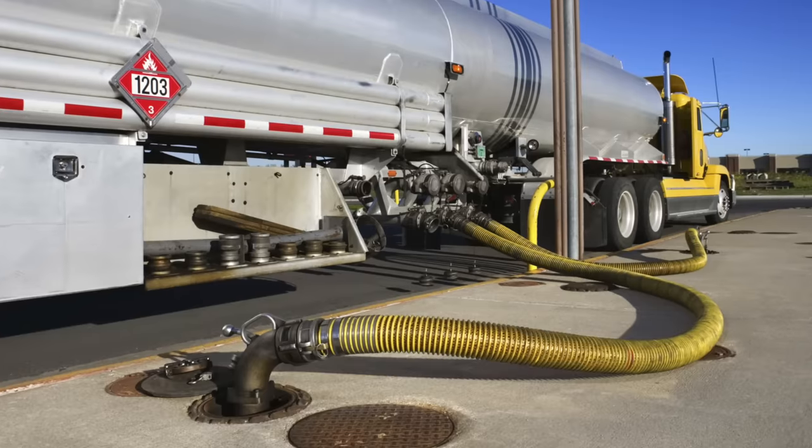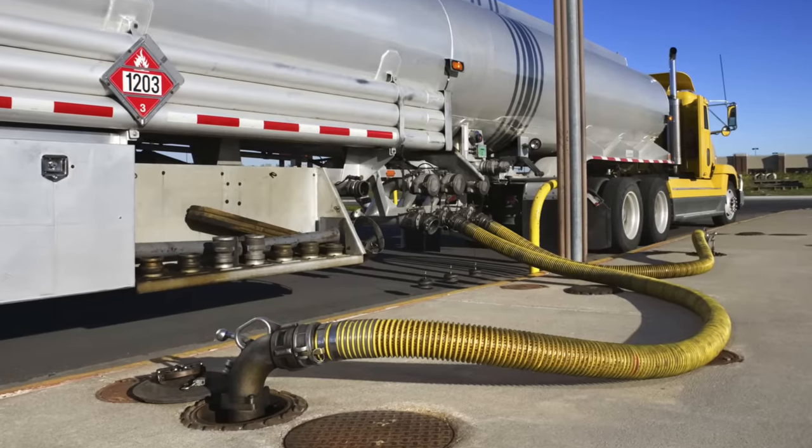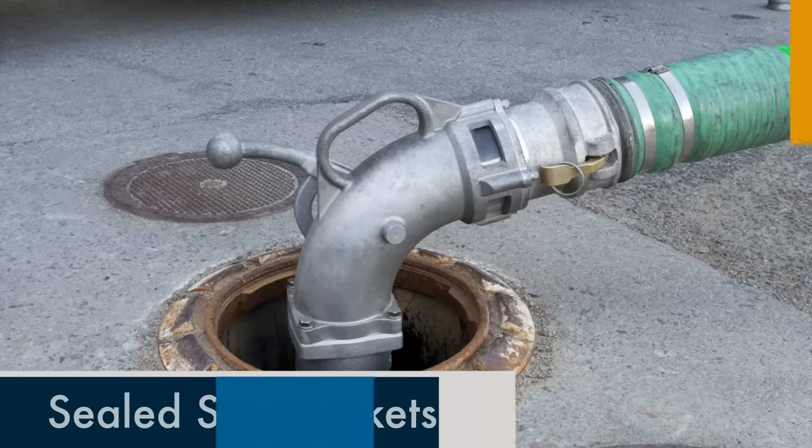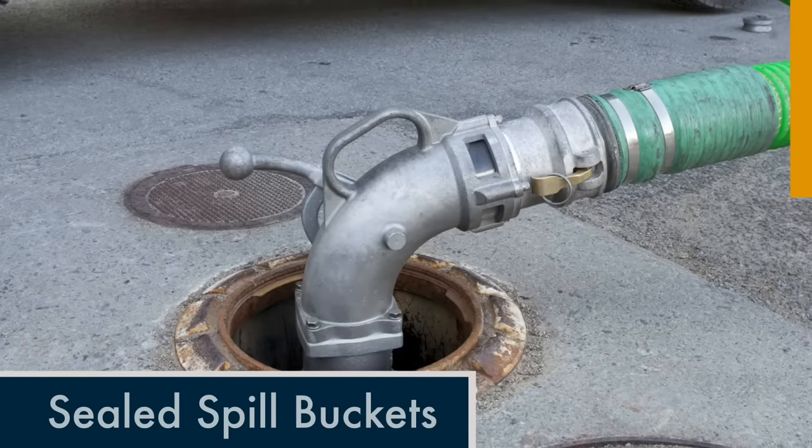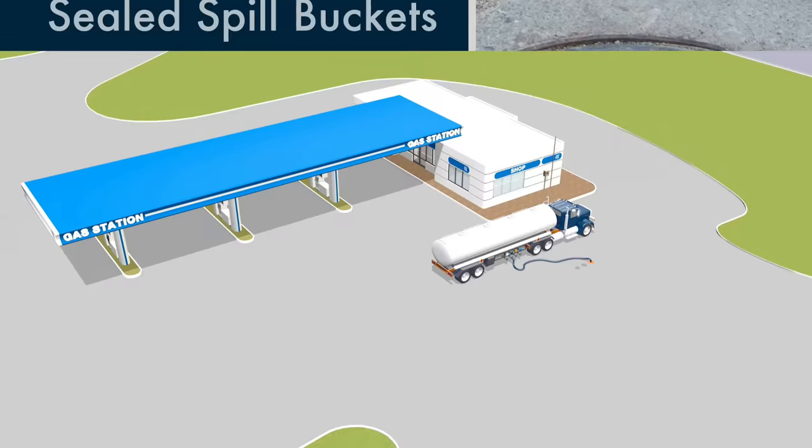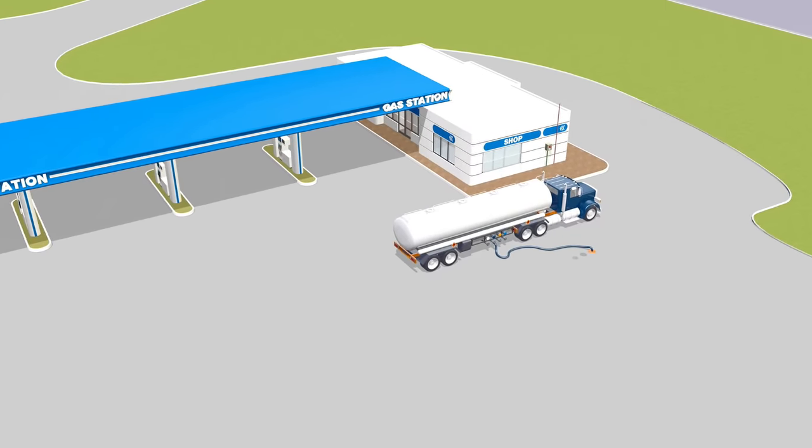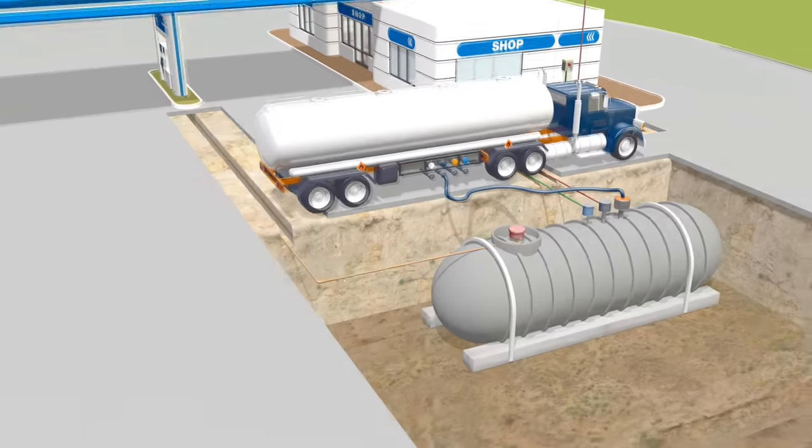And when the underground storage tanks need refilling, the connections to the fill pipes are located in sealed spill buckets, which direct any fuel spilled straight into the tank. But that's just the beginning of the safety story. The rest is literally below the surface.